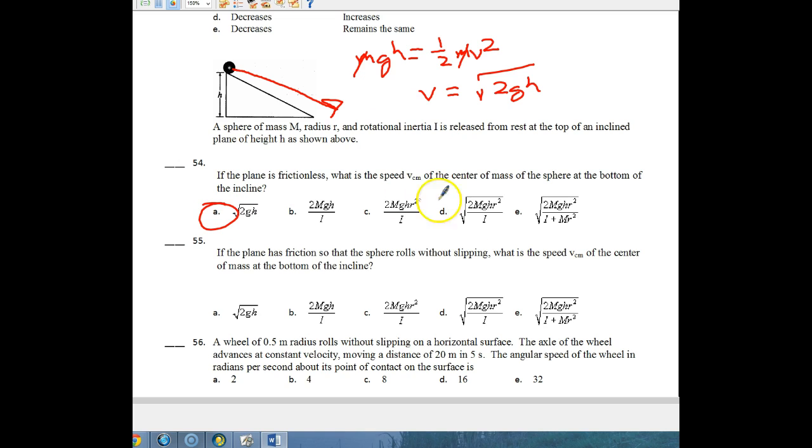For number 55, this one is a little bit more complicated, because now it says if the plane has friction so that the sphere rolls, so now it's rolling down the hill without any slipping, what is the speed of the center of the mass at the bottom of the incline? We know that at the top of the hill, we're going to have MGH. At the bottom of the hill, we're going to have two different kinetic energies, one-half M V squared plus one-half I omega squared. We know that omega is equal to V over R.